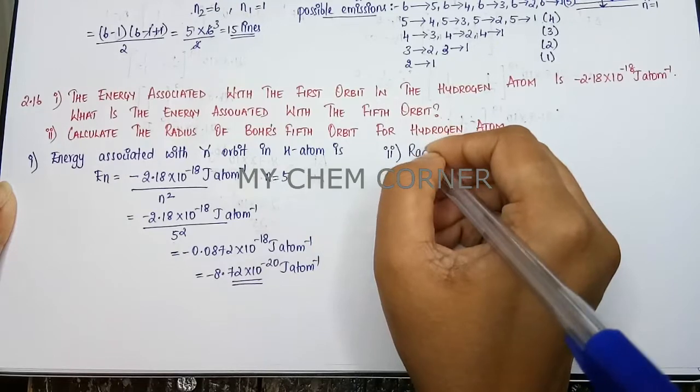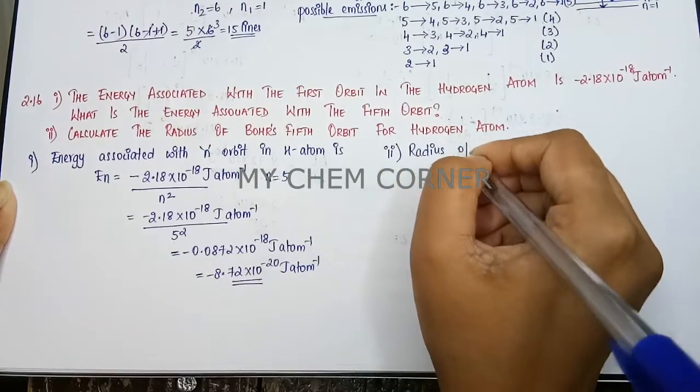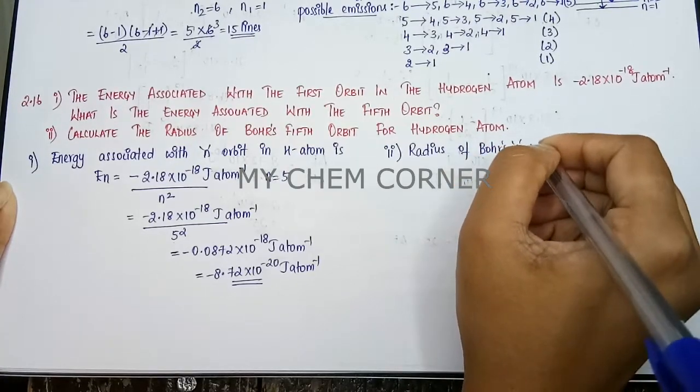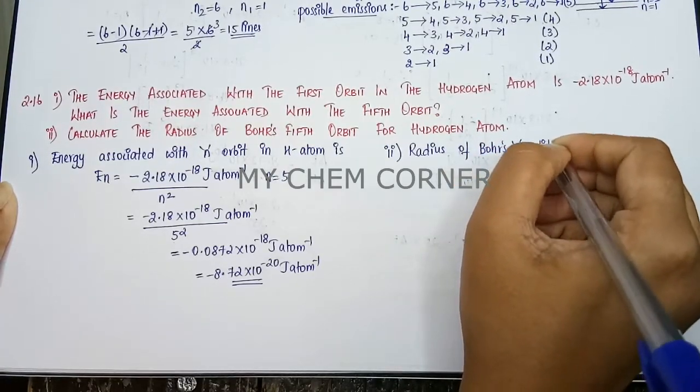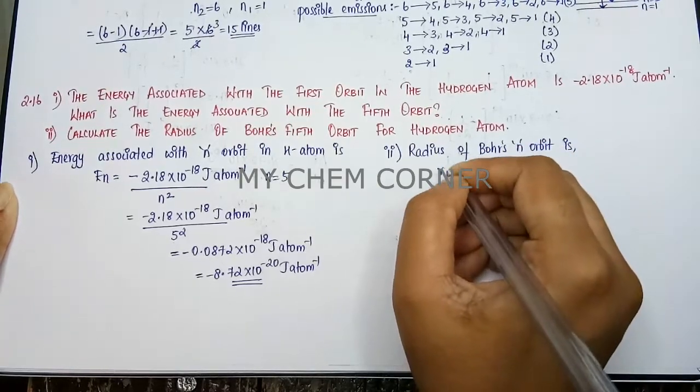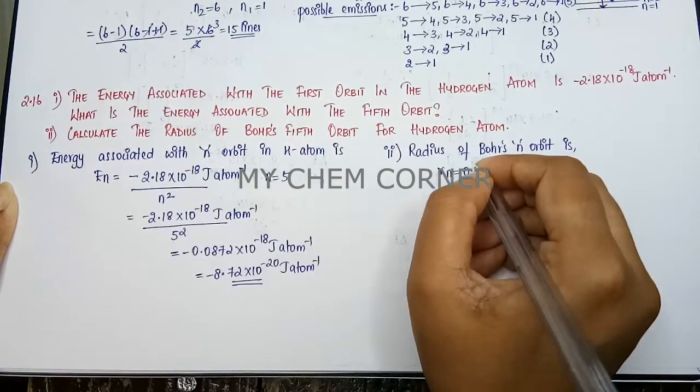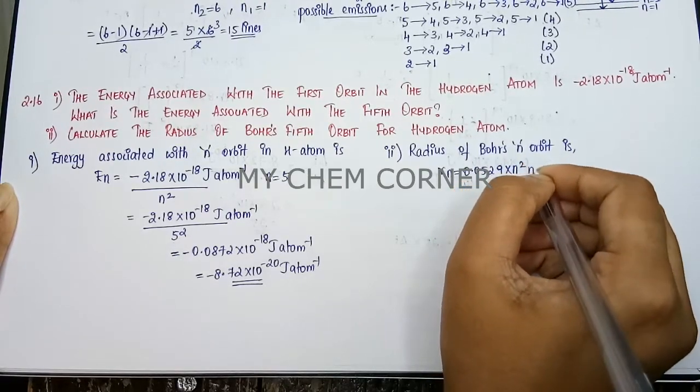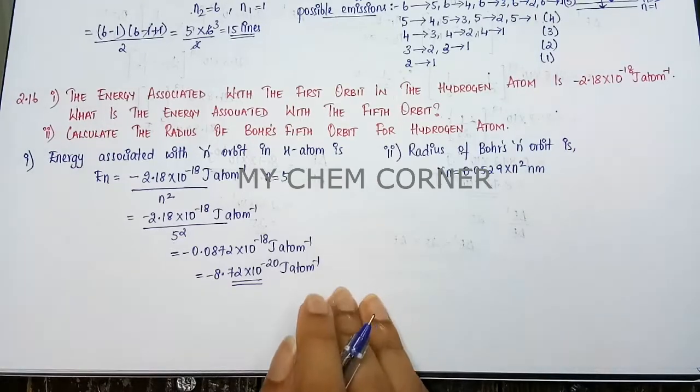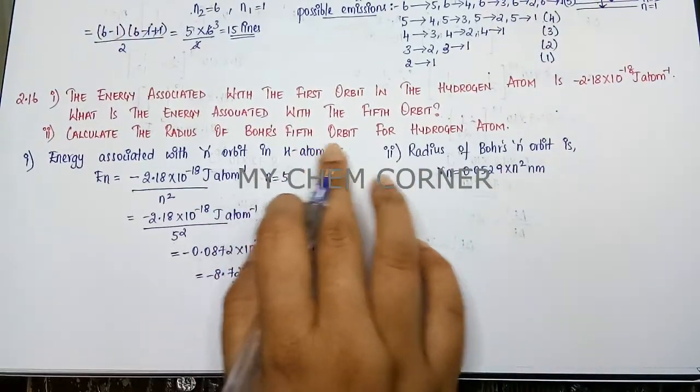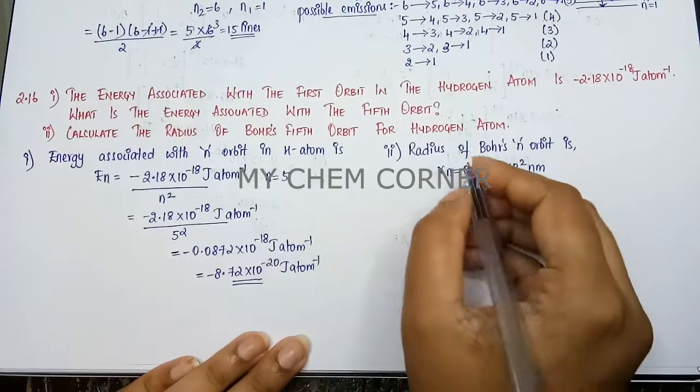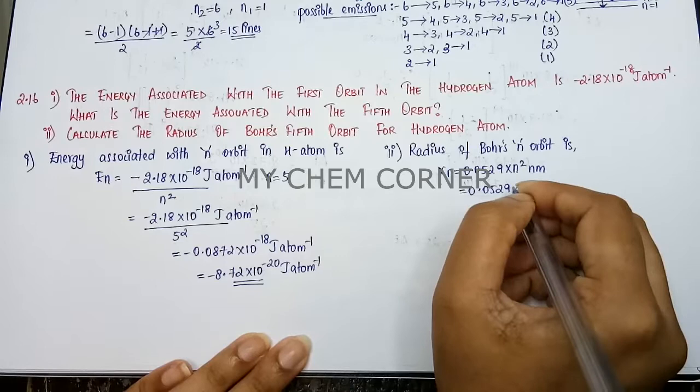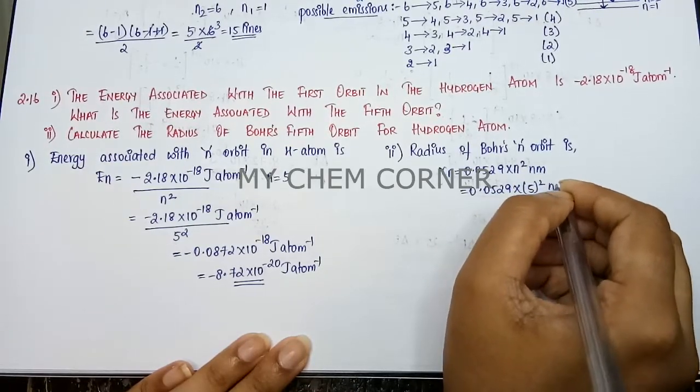So we say radius of Bohr's nth orbit is rn is equal to 0.0529 into n square nm. Now here also n is 5 because it is talking about the fifth orbit. So therefore we can write 0.0529 into 5 square nm.